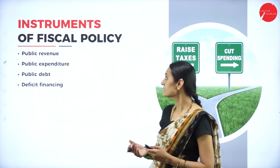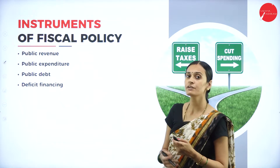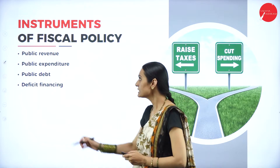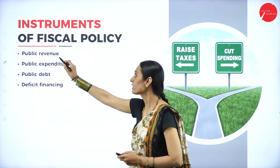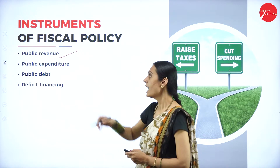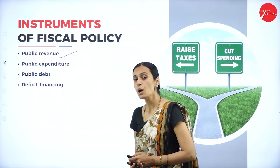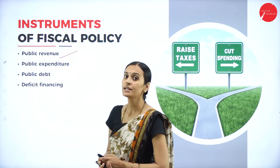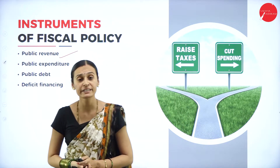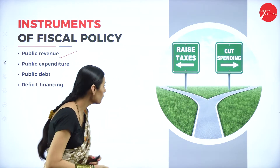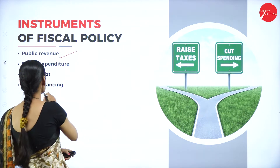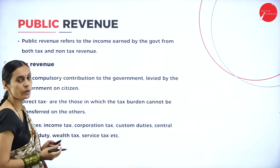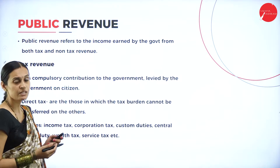Let us discuss the different instruments of fiscal policy. First is public revenues; second is public expenditure; third is public debt; and fourth is deficit financing. Let us discuss them one by one.